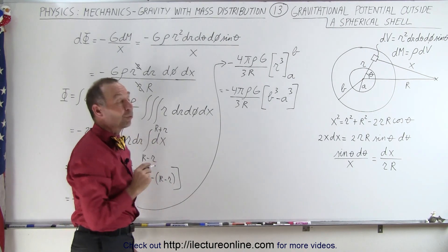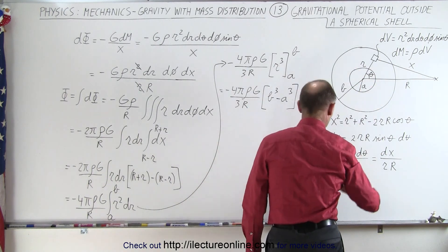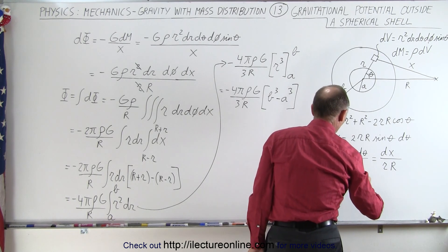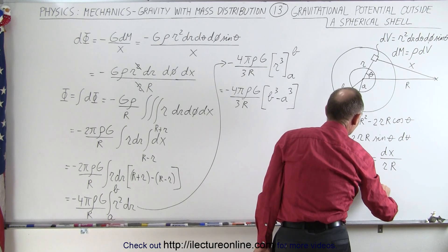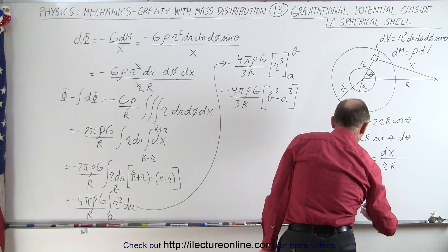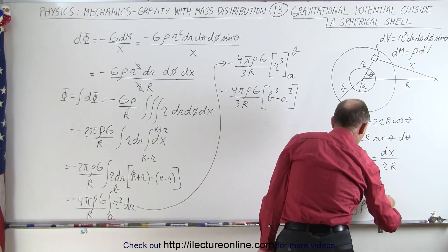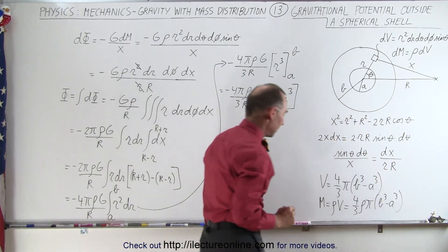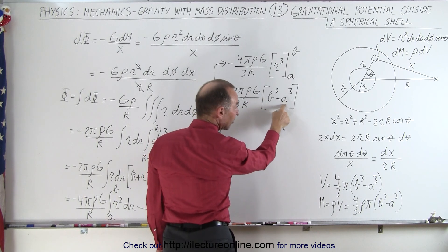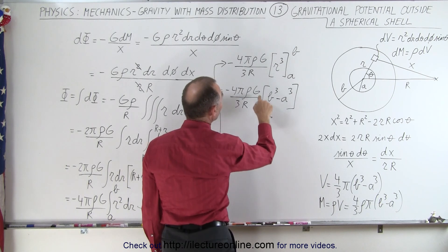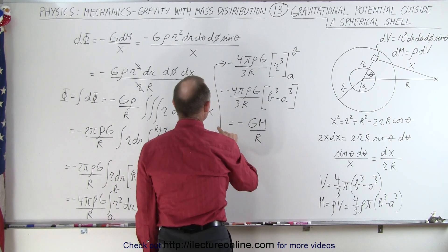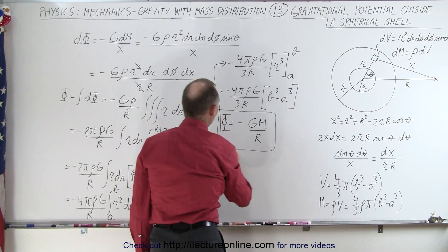Now we recognize that the volume of the shell is (4/3)π(b³ − a³), and the mass is density times volume: M = (4/3)πρ(b³ − a³). So the factor 4πρ(b³ − a³)/3 is just the mass M, and what we're left with is −GM/R. This is the gravitational potential at a point outside the hollow spherical shell.